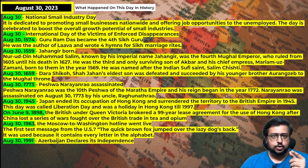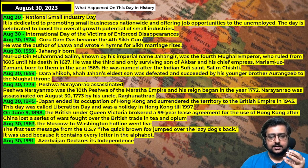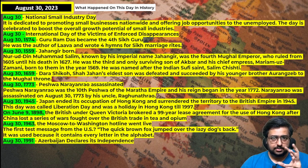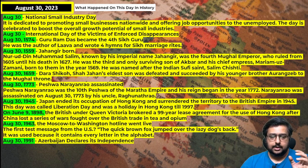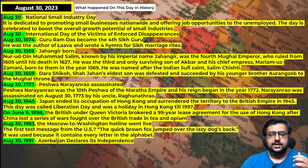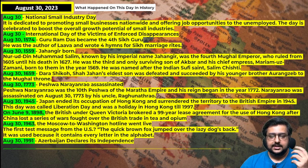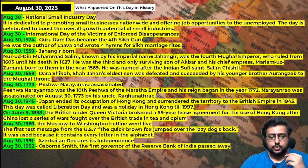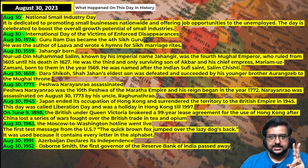Azerbaijan — a country involved in the Azerbaijan versus Armenia war I showed on the map two days back — declared its independence on August 30, 1991, when the Soviet Union was disintegrating and many new countries were being formed.